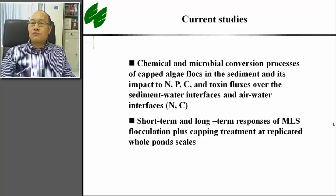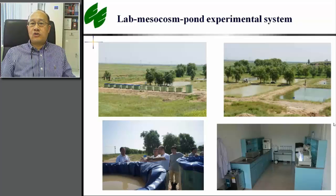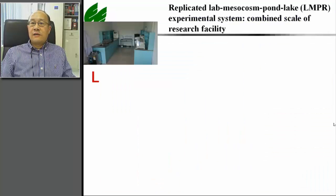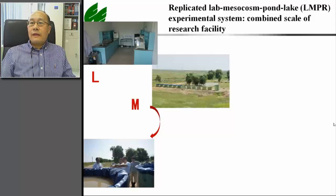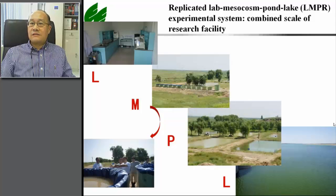Short-term and long-term responses of MLS flocculation plus capping treatment at duplicated whole pond scales are also being studied. For this purpose, we are building long-term study fields containing laboratory, mesocosm, and pond experimental systems in Tsertian Reservoir, which is 250 kilometers west of Beijing. With this facility, we can study the effect of various geoengineering methods at laboratory, mesocosm, and pond scale in a replicated way, which can also be tested in open water.